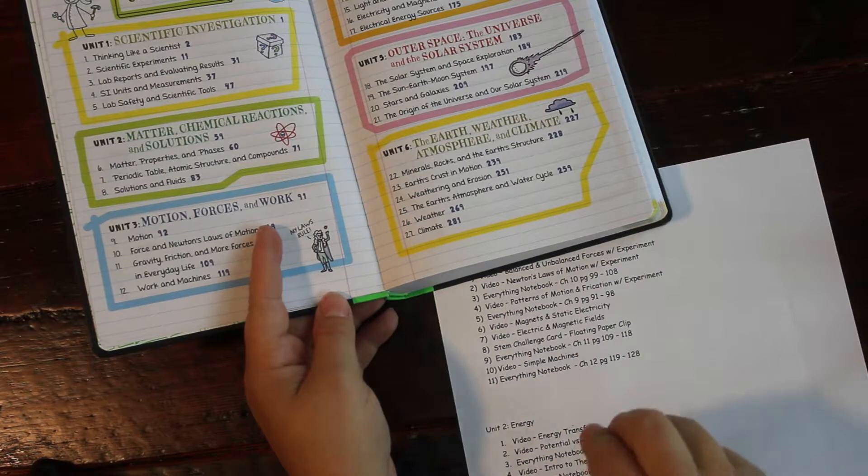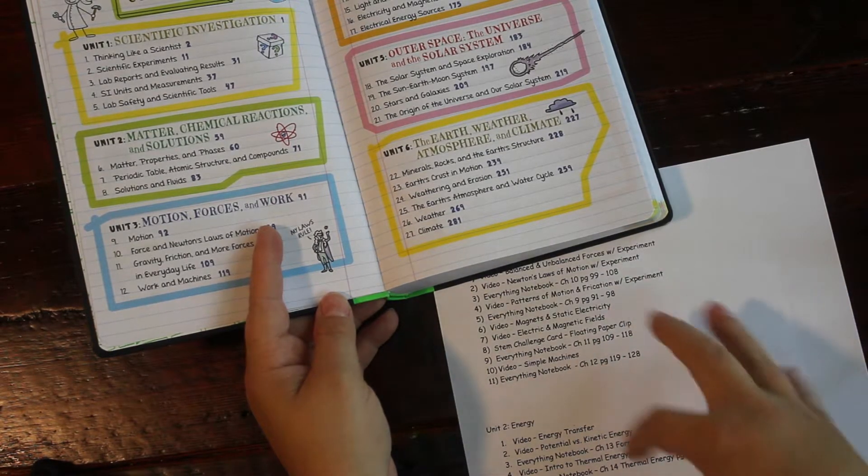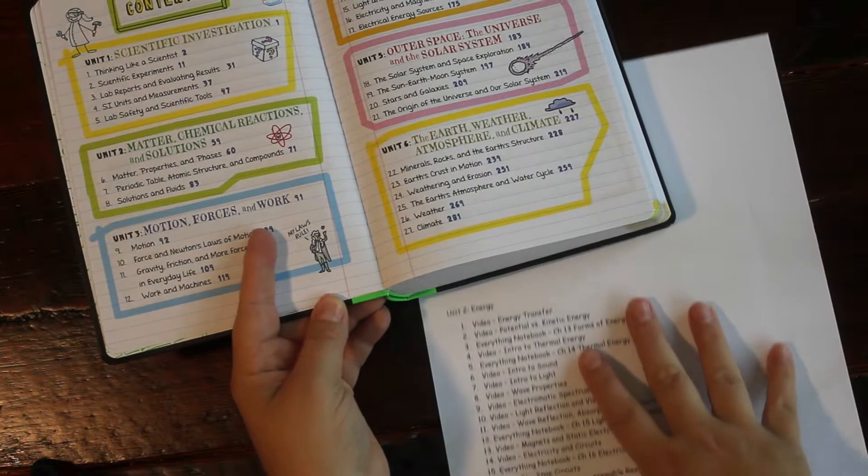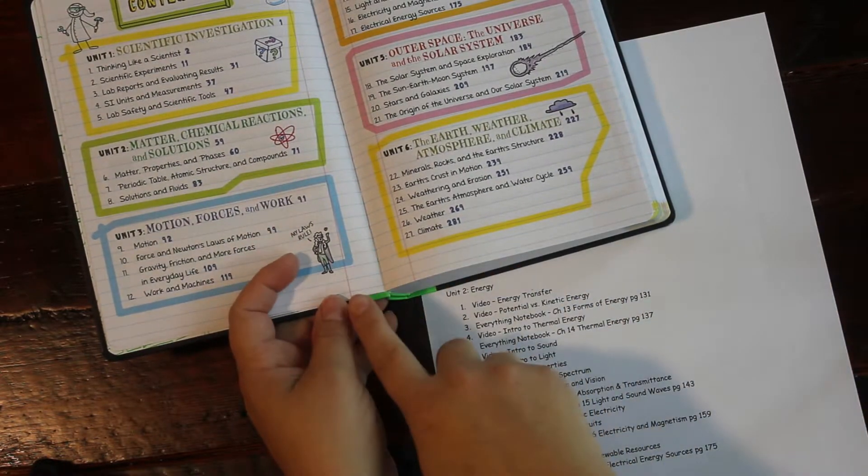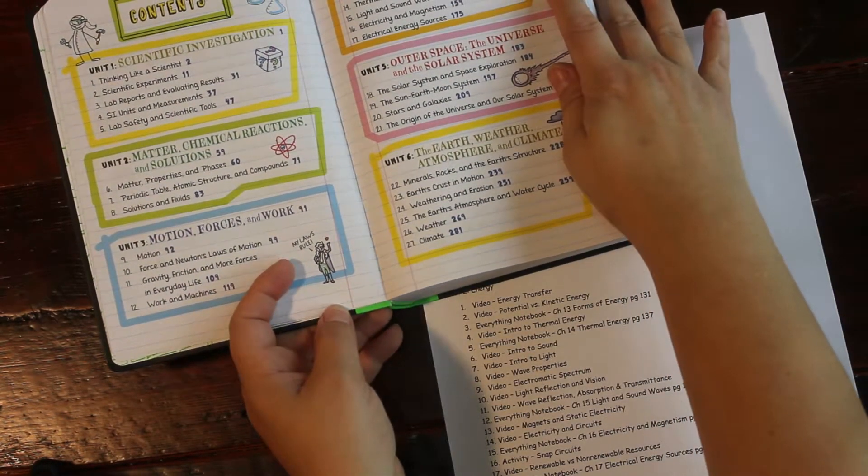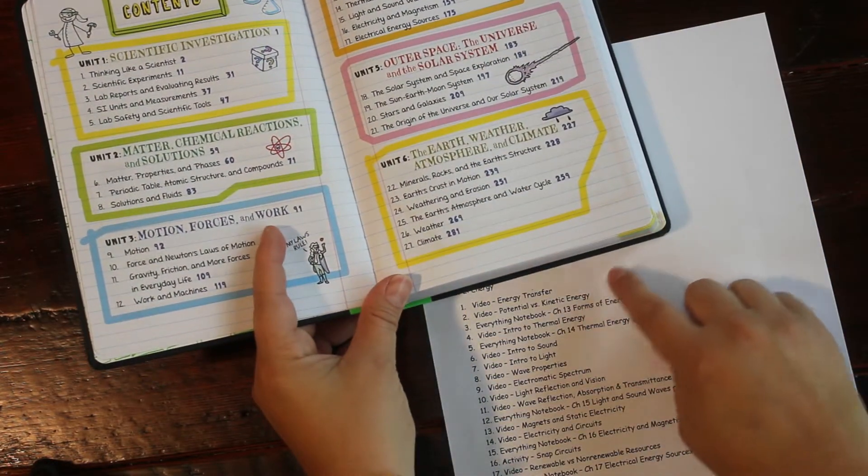So anyways, that's what those are when you see them on the list here. But so basically we just kind of follow that pattern. The next unit we started with energy, which is unit four in this book. And so as you can see, we watched...